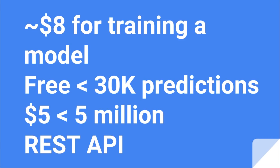However, one thing that was undoubtedly cheap was the prediction service. A relatively simple REST API is automatically set up. 30,000 free API calls are included and it is only $5 for up to 5 million requests. We did not test that limit, but it is incredibly cheaper than setting up a dedicated server interfacing with a machine learning model. In essence, AutoML is expensive to develop, but really cheap to use operationally.